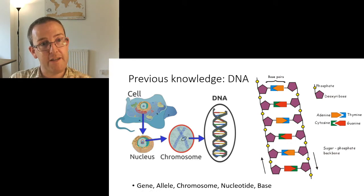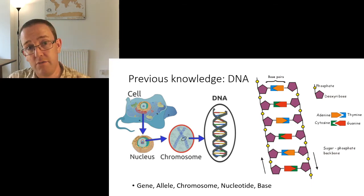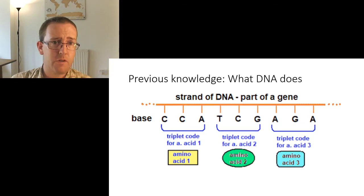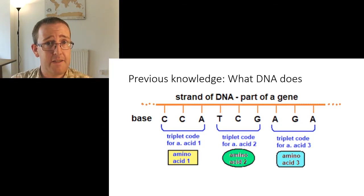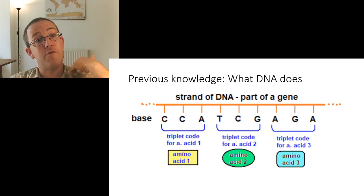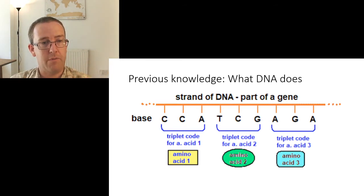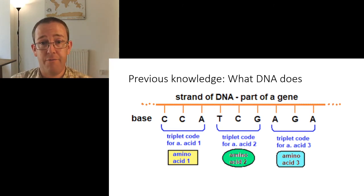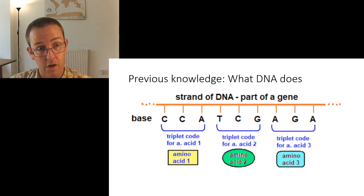If you can have a quick look over what you did at GCSE in terms of nucleotides and base pairing — schools tend to vary in how much detail they cover on this. DNA codes for protein, and the GCSE at the highest level goes into the idea of the triplet code — the idea that three bases spell out one amino acid, and the order of those amino acids makes a protein. That's about as far as you go at GCSE, so it's worth looking at the GCSE level material on this because that is where we start at AS level.